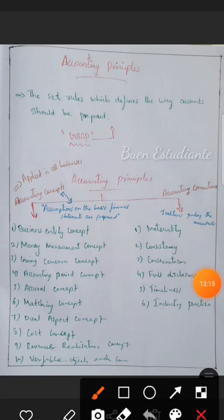The Revenue Realization Concept states that revenue should be recognized only when it is actually realized. For example, a furniture company sells furniture on credit to a customer. The revenue is recognized at the point of sale, even if the cash will be received in the future. We record revenue when the sale is made, not when the cash is collected.